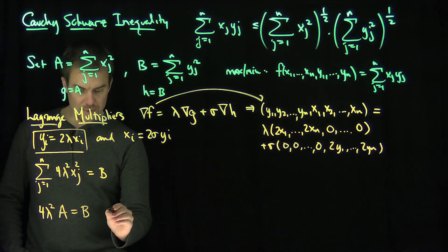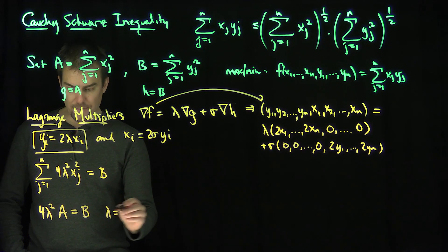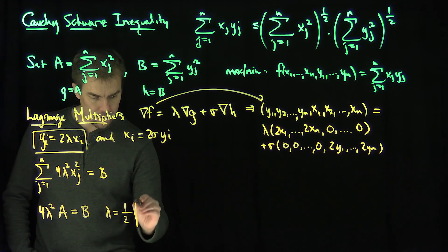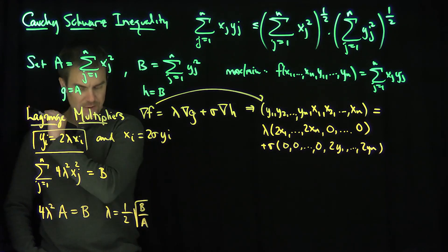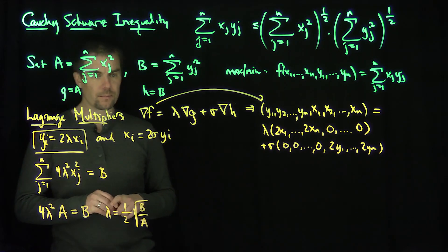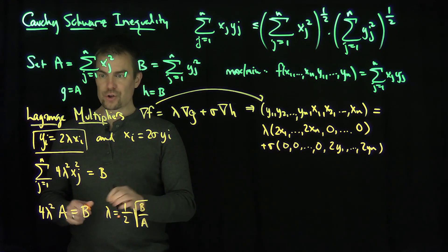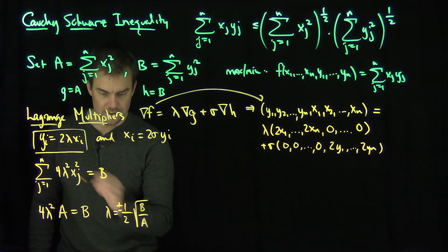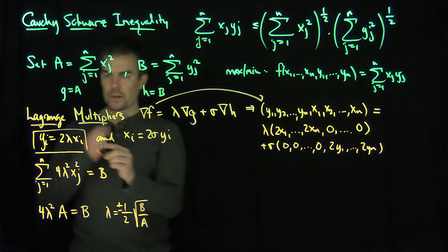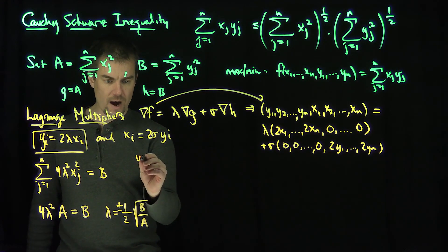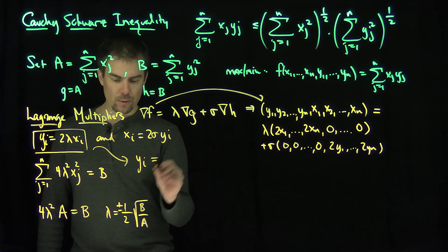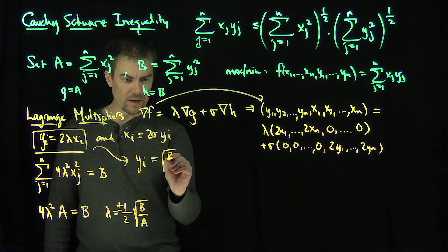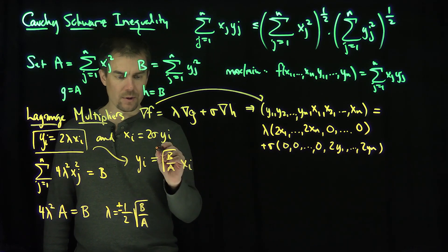From this I can conclude that lambda is equal to one half times the square root of b over a — dividing by a and taking the square root, we get the square root of 4 giving us the one half. Of course this is plus or minus; the minus is going to give the absolute minimum. So the relationship updates: yi equals 2 lambda xi, and the 2's cancel, giving yi equals plus or minus the square root of b over a times xi.